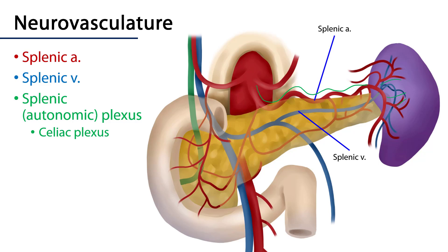There are also tributaries that exit the hilum of the spleen that form the splenic vein. The splenic vein is one of two major veins which form the hepatic portal vein, the other being the superior mesenteric vein.